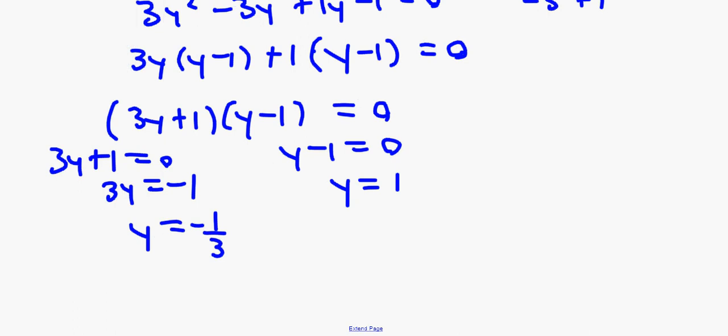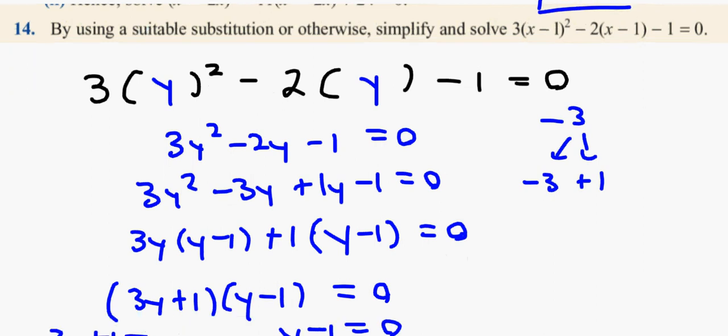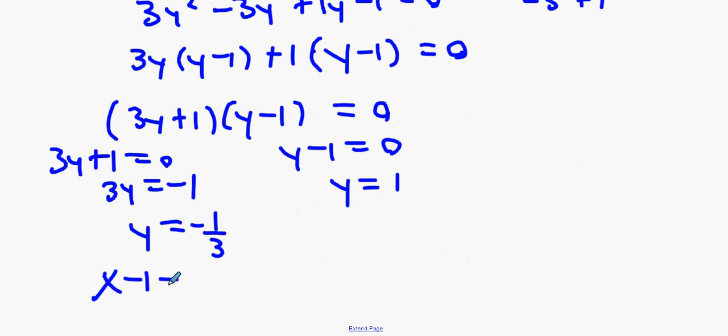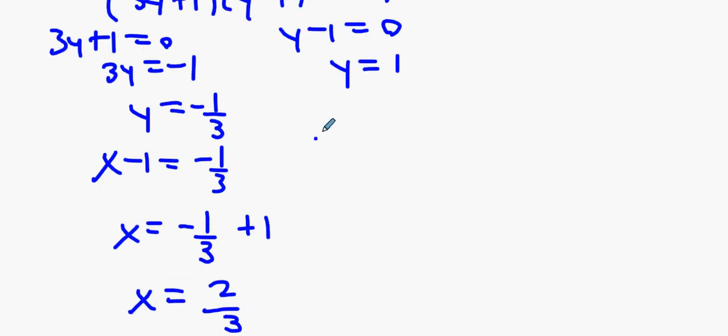Now guys, once you get your two answers for the y values you're going to replace y with x minus 1. That's what you said at the very beginning. So you're going to say x minus 1 equals minus 1/3. You're going to say x equals minus 1/3 plus 1. Put that into the calculator you'll find out it's 2/3. Next, x minus 1 equals 1 because y equals 1, then you're going to get x equals 2 as well.